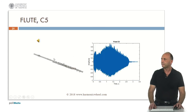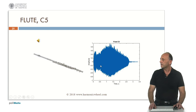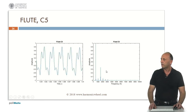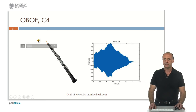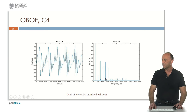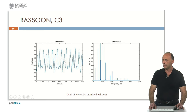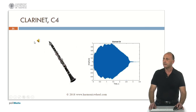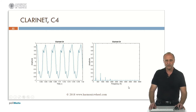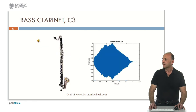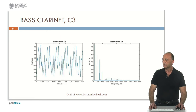Flute, C5 — the waveform and the spectrum. The oboe, C4, which has a double reed — the waveform and the spectrum. The bassoon, also with a double reed — the envelope, waveform, and spectrum. The clarinet, C4. In this case the spectrum only contains odd harmonics, not the even ones. Likewise the bass clarinet, C3, also only odd harmonics.